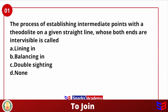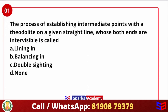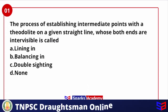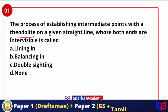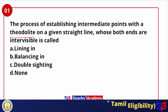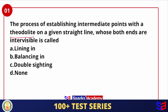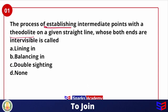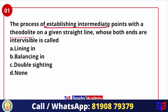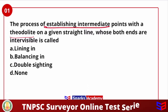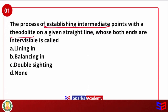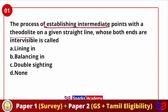First question: 'The process of establishing intermediate points with the theodolite on a given straight line whose both ends are inter-visible is called.' Let's look at the objectives of the theodolite — it is helpful for measuring horizontal angles, vertical angles. It can also be used to prolong lines and to establish intermediate points on a survey line, whether it is an open traverse or closed traverse.